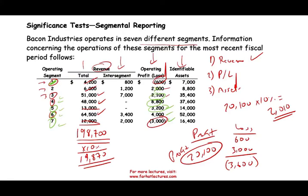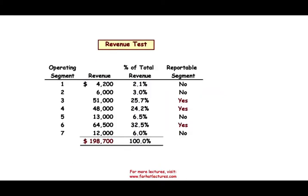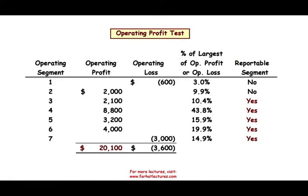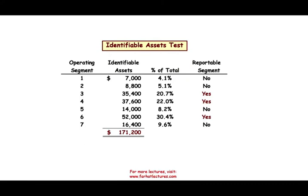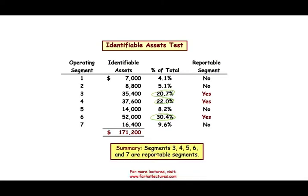The last test is the asset test. We add up all identifiable assets — they total $171,200. Ten percent of that is $17,120. Segments 1 and 2 are not reportable under the asset test; the rest are reportable. So in summary, segments 3, 4, 5, 6, and 7 are reportable operating segments and must be reported separately.